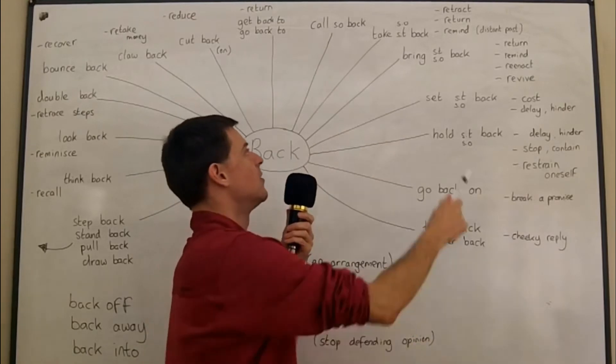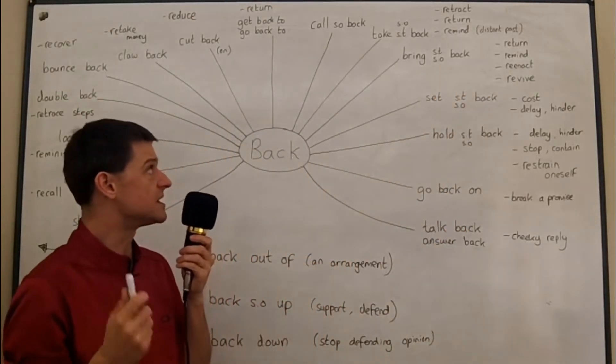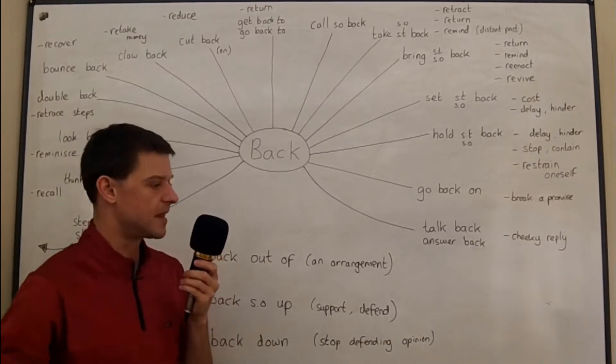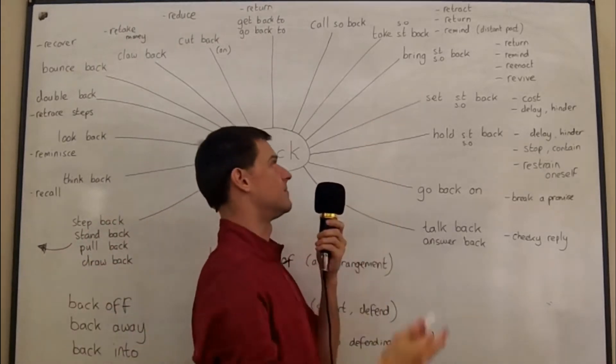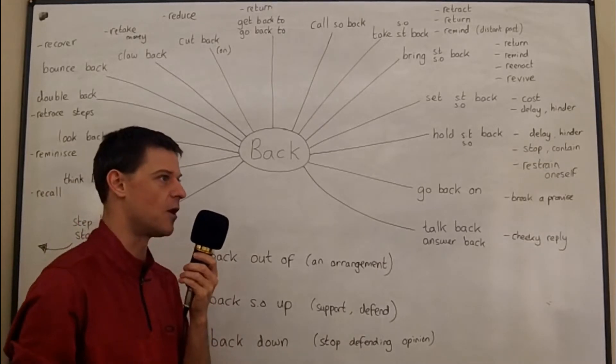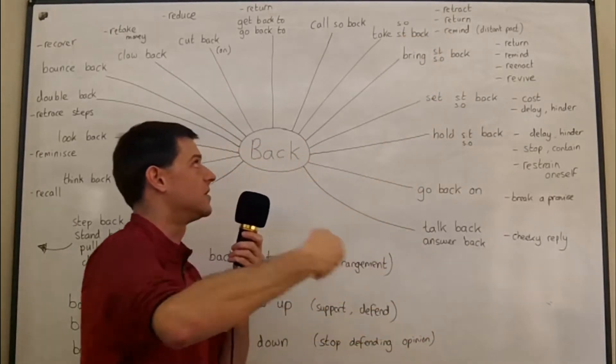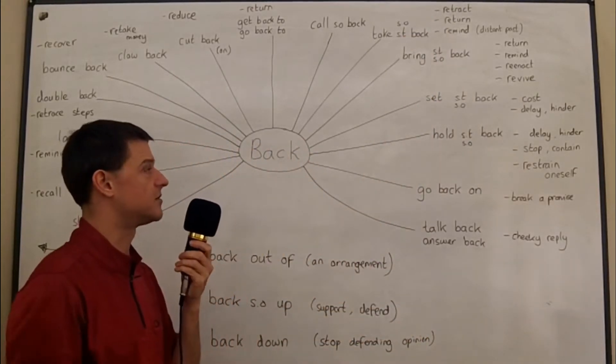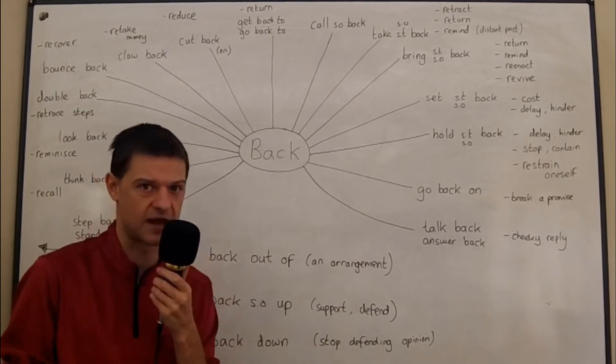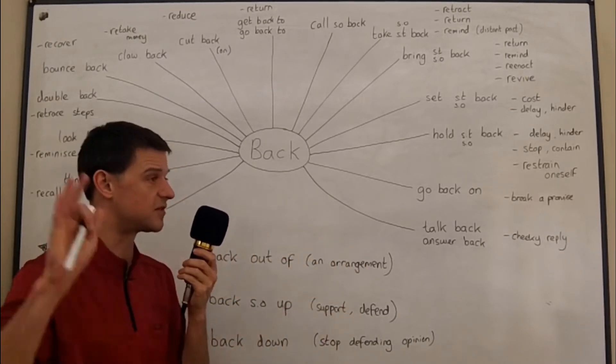Take someone or something back, or bring someone or something back - the main reason that these are difficult is because they have a lot of different meanings. So if you take something back and you say I said something really wrong, I upset someone, and so I'd like to take it back - that means you are retracting your words. You're taking your words back. You're saying that you didn't mean what you said earlier, or you understand that it's wrong or incorrect in some kind of way.